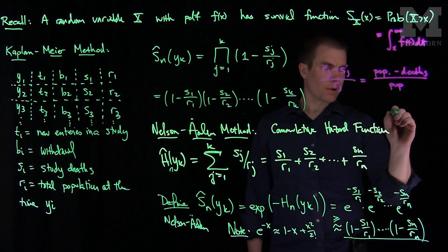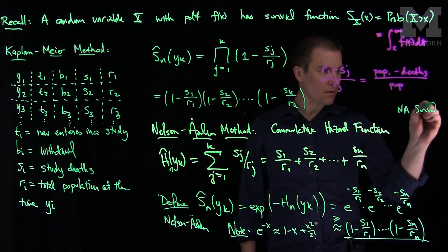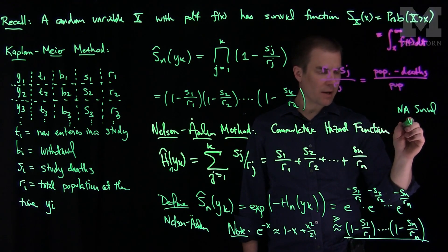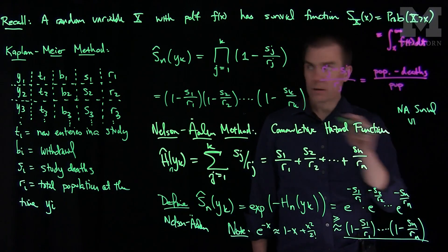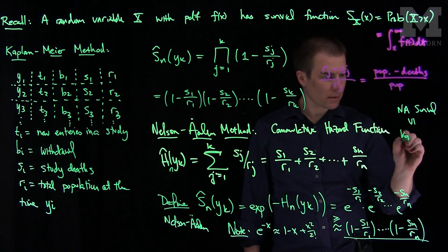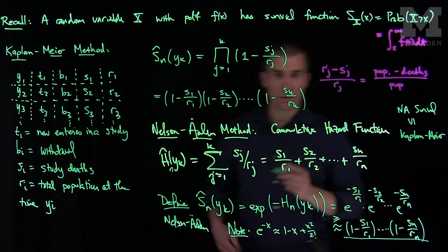So we can sort of summarize: the Nelson-Aalen survival function is always bigger than or equal to the Kaplan-Meier survival function.